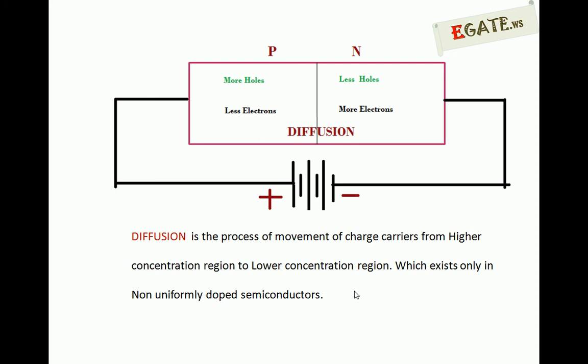Normally, diffusion exists only in non-uniformly doped semiconductors. If the semiconductor is uniformly doped, holes and electrons are present equally everywhere, so there is no concentration gradient and no diffusion occurs. Therefore, the second process in forward bias is diffusion, following injection.